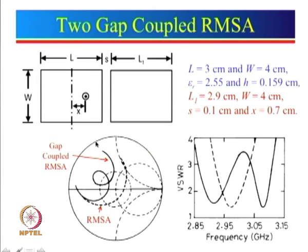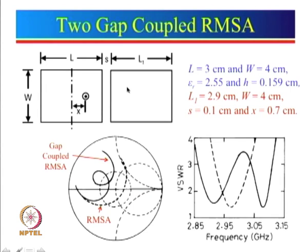The coupling to the second patch is through the entire width of the patch. The second patch is not fed at all, so it is known as a parasitic patch. This patch is being fed, and from here there will be fringing fields which will get coupled to the parasitic patch and excite it. So now there will be two resonances. We can see that this is the response for a single patch, showing one resonance frequency.